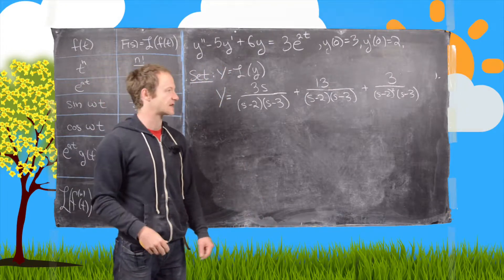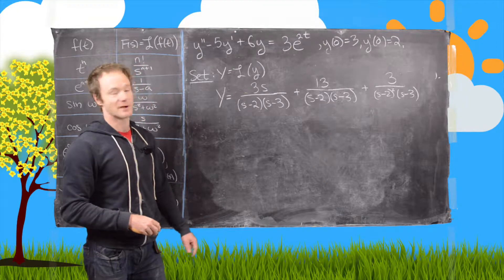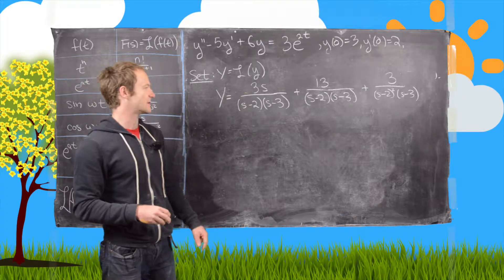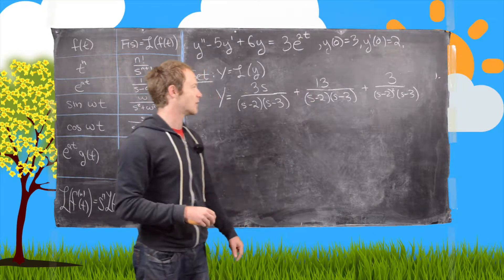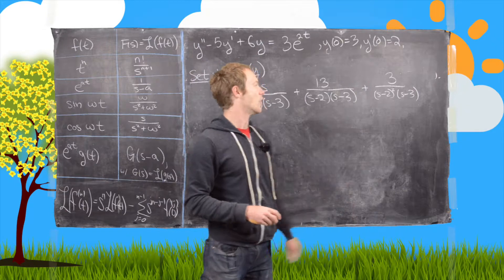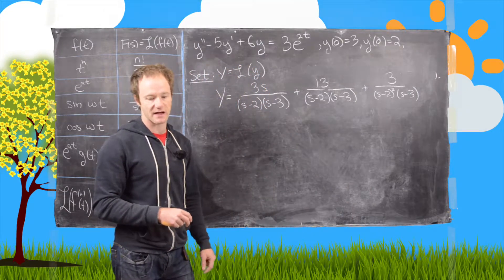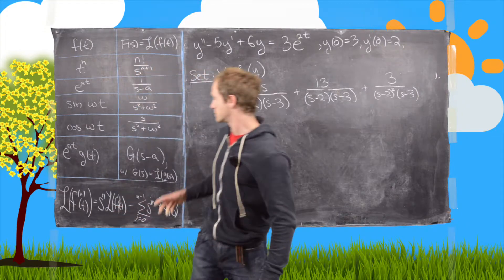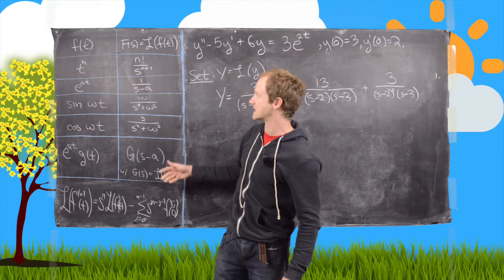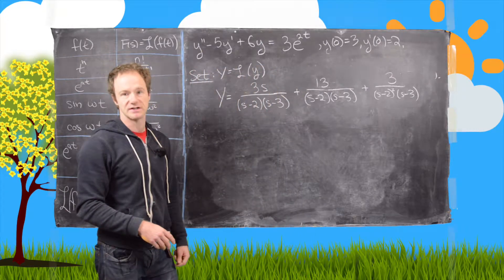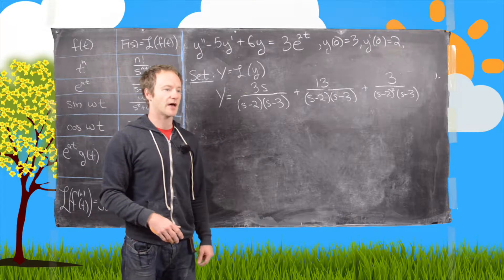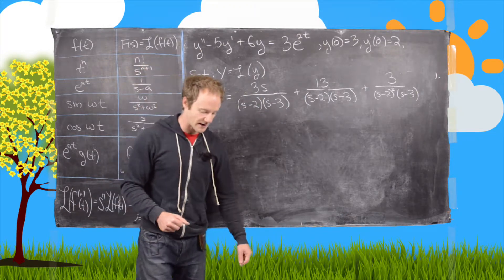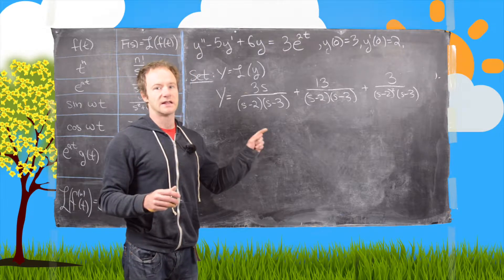I noticed I had a small typo in the previous version, but I've fixed that. Capital Y equals 3s over (s minus 2)(s minus 3), plus 13 over (s minus 2)(s minus 3), plus 3 over (s minus 2) squared times (s minus 3) — that last term was missing the squared. Now, to proceed we write each of these terms as rational functions using partial fraction decomposition. I have other videos on that, but I'll demonstrate a quick method here.